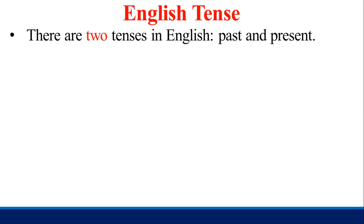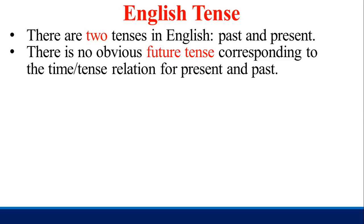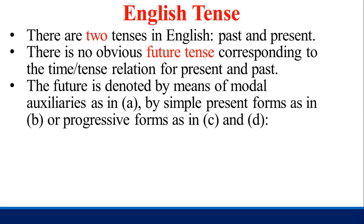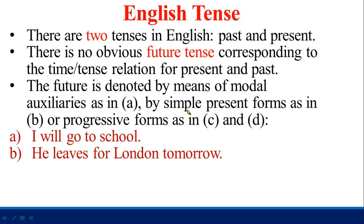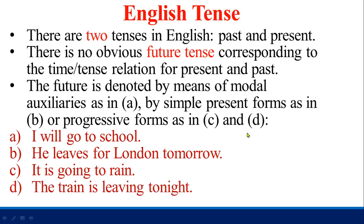There are two tenses in English: past and present. There is no obvious future tense; the future is denoted by means of modal auxiliaries — for example, 'I will go to school' (using modal auxiliary 'will'); by simple present forms — 'He leaves for London tomorrow'; or by progressive forms — 'It is going to rain' and 'The train is leaving tonight.'